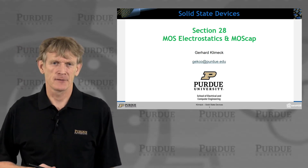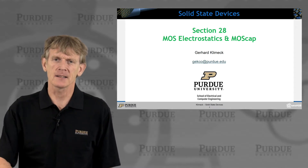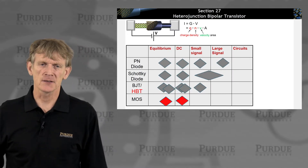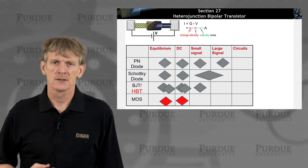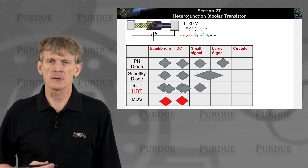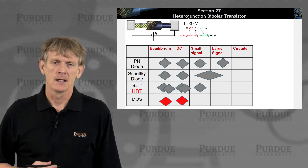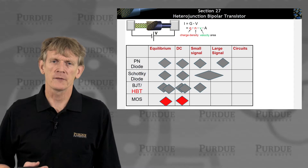Let's talk about, finally, MOS devices. We'll start out with MOS electrostatics and an MOS capacitor. This is in the context of spending almost a semester long on PN junctions, Schottky diodes, and before that we dealt with materials and statistical approaches to carriers. And now we're finally getting to MOS devices.